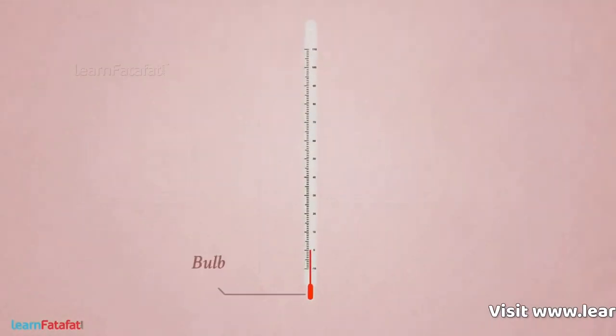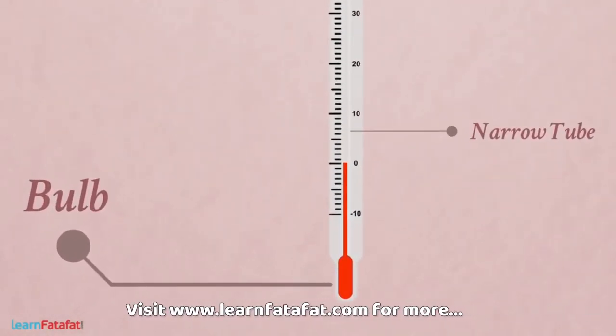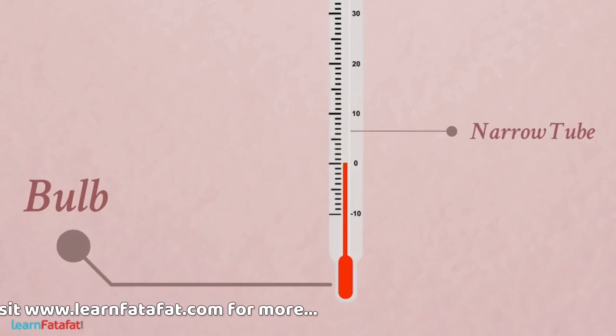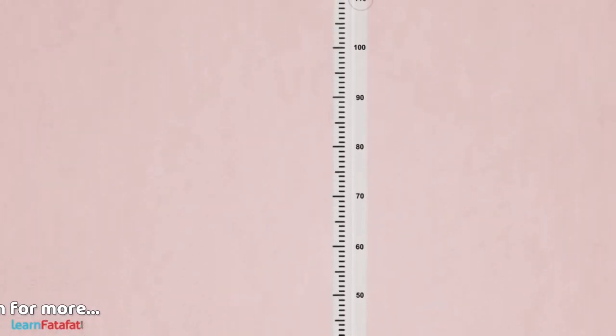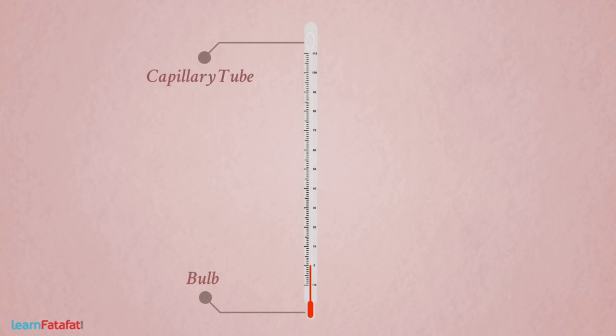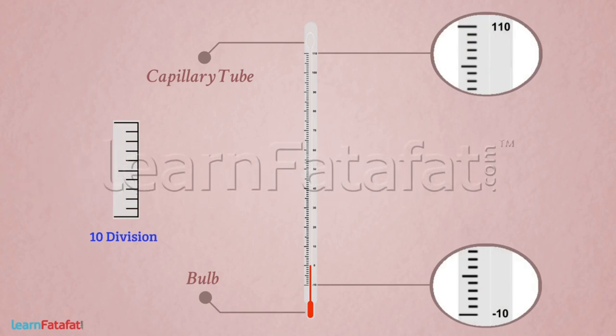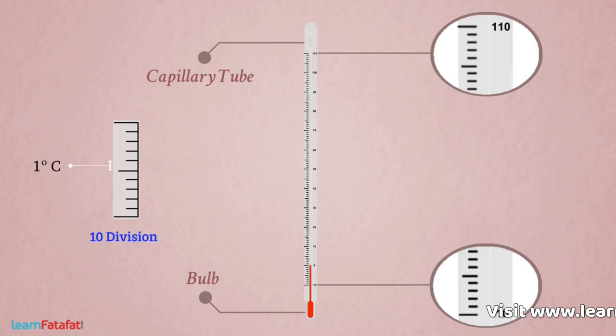There is a bulb at the side of thermometer. A narrow tube having same thickness throughout originates from the bulb and extends towards the highest reading. A tube formed by this bore is the capillary tube. Generally, the laboratory thermometer have scale between minus 10 degree Celsius to 110 degree Celsius. There are 10 divisions between each consecutive numbers, that means each division indicates 1 degree Celsius.